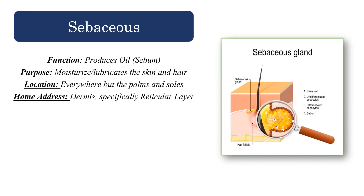The home address of your sebaceous glands is in your dermis. There are three layers of the skin: the epidermis, the dermis, and the subcutaneous layer. The dermis is made of two layers — the reticular layer and the papillary layer — and the sebaceous gland is actually found in the reticular layer.